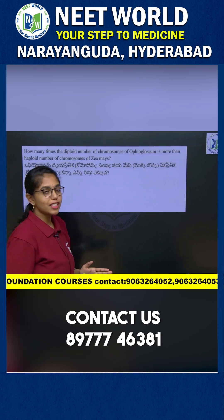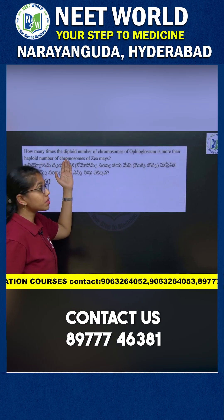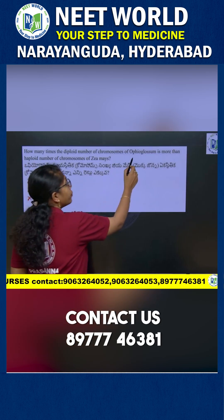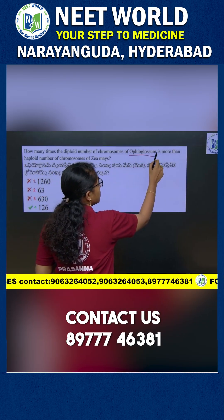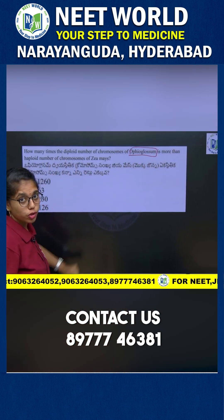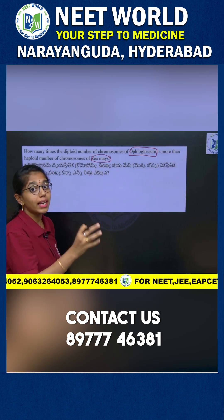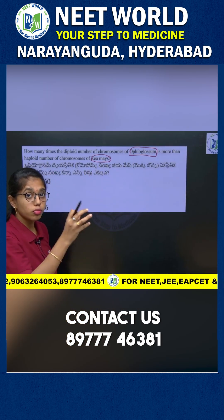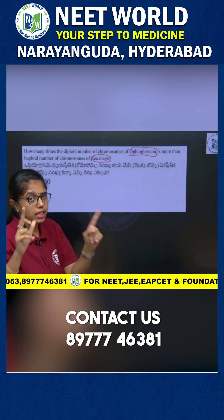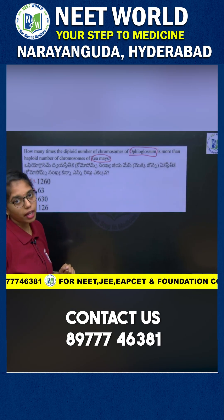Look into this question: how many times is the diploid number of chromosomes of Ophioglossum more than the haploid number of chromosomes of Zea mays? You have to clearly know the diploid and haploid chromosome numbers, which are given in the cell biology table in your academy.